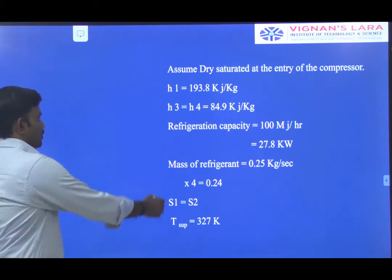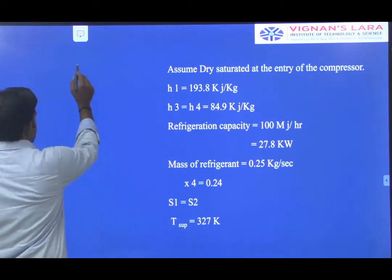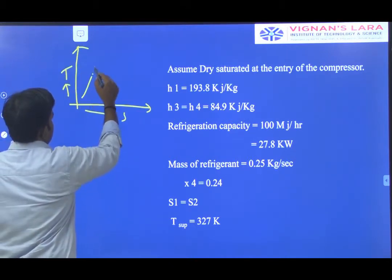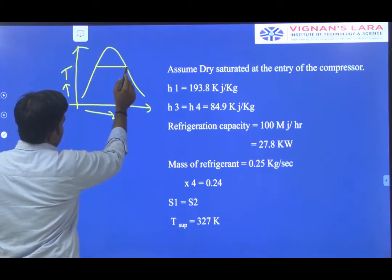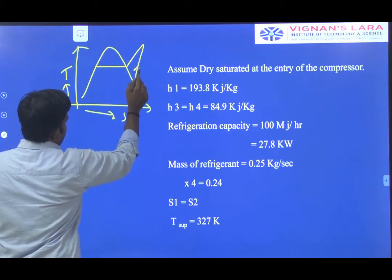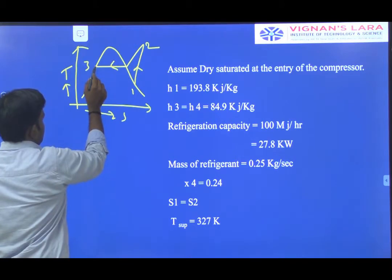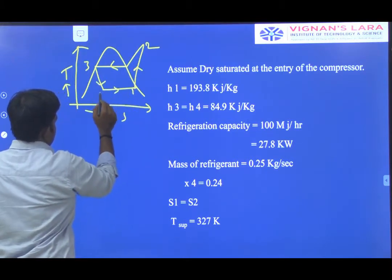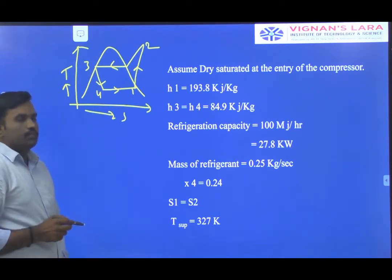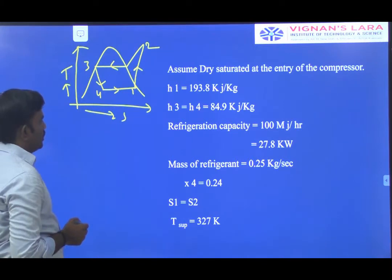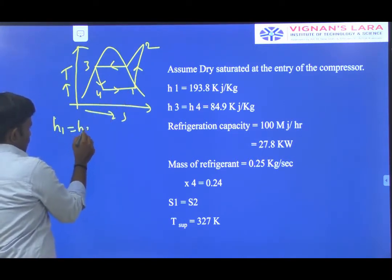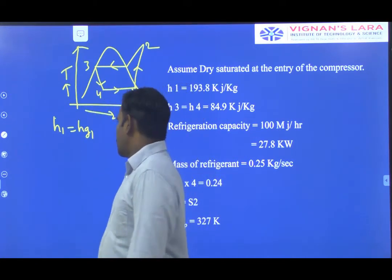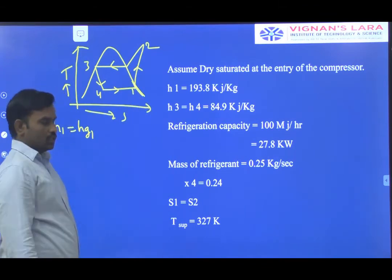With the help of the PH and TS diagrams, you have to evaluate the enthalpy at every point in the cycle. I will use the TS diagram to evaluate the performance of the VCR system. H1 is equal to HG1. Point 1 is on the saturation curve, meaning H1 equals HG1, which we take directly from the property table. Point 1 lies at 15 degrees centigrade temperature line.